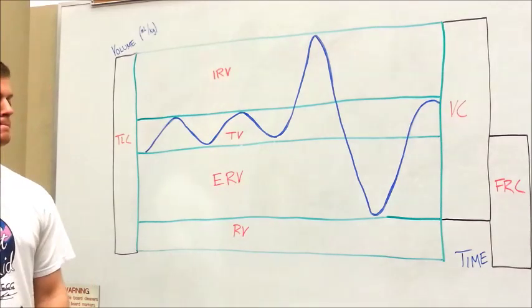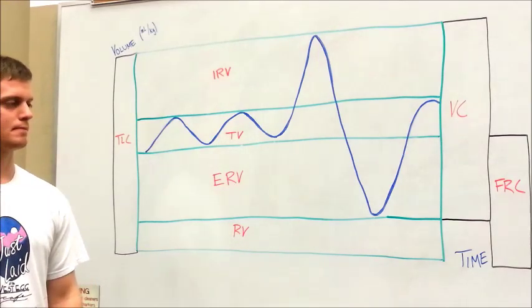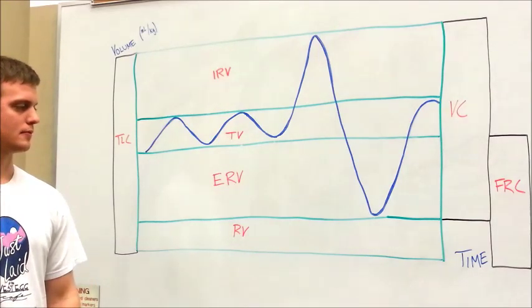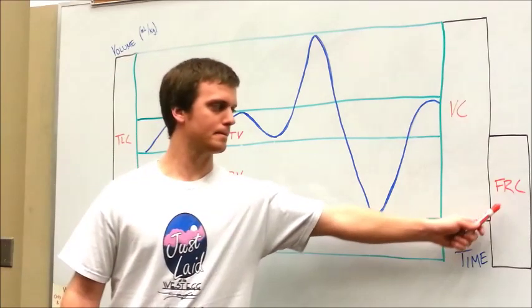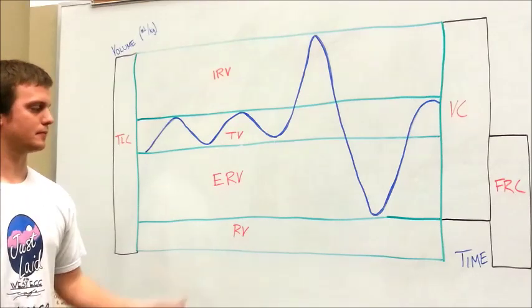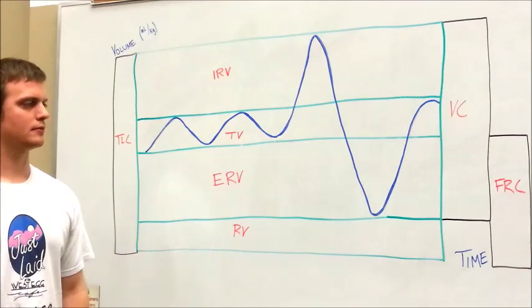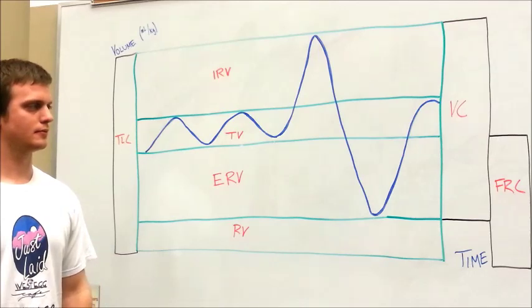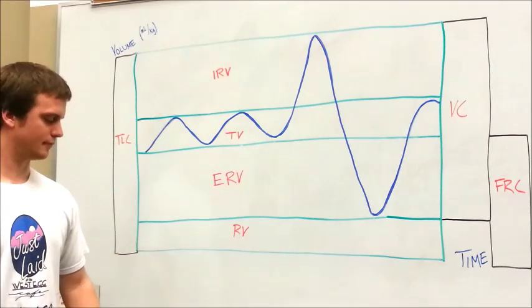But clinically here, asking the patient to blow out their residual volume is impossible. Finally, we've got the functional residual capacity. Again, we're not able to actually measure that because of the residual volume. We're not able to ask him to blow that out. And that is the clinical basis for the lung diagram.